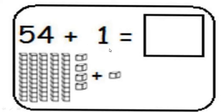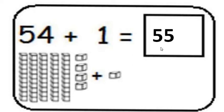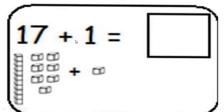54 plus 1. These are 54 blocks — I have to add one more to it. If I want to add one more to the given number, as a result I will get just the after number. 54 plus 1 is 55. Next — 17 plus 1. Again, we are adding one more to the given number. After 17, which number will come? 17 and 1 — 18.